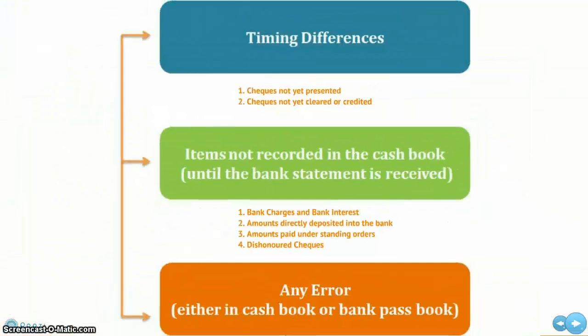And in the third category, we include any error either made by the business in the cash book or by the bank in the pass book.